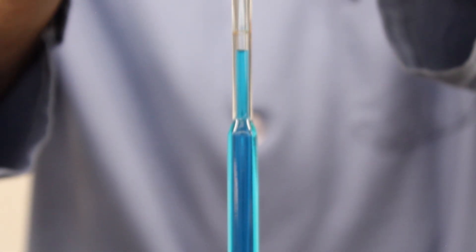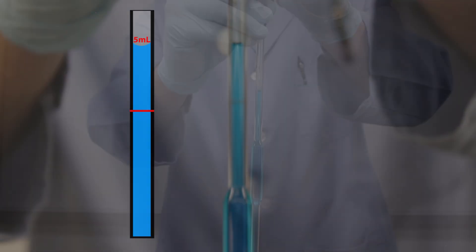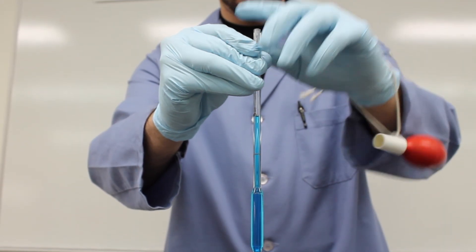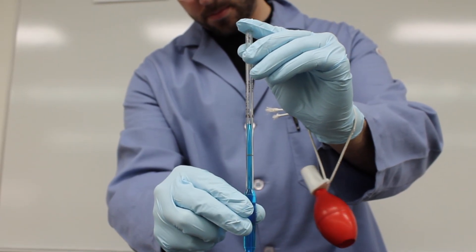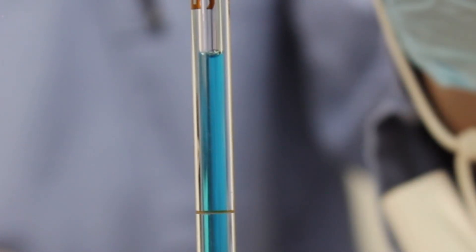Fill the pipette past the graduation line but be careful not to get any liquid up into the bulb. Now this is the tricky part. Quickly remove the bulb and place your thumb over the opening at the top of the pipette. This will stop the liquid from draining out of the bottom of the pipette.